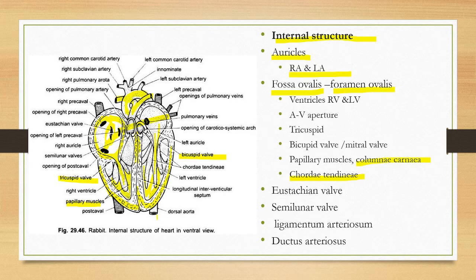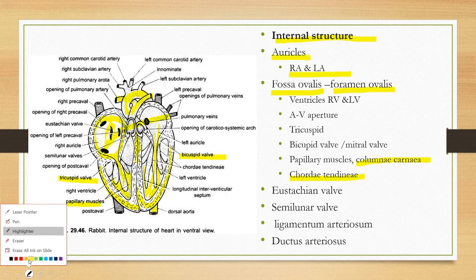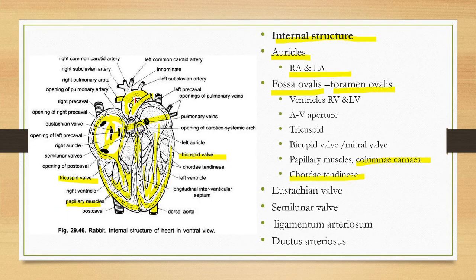The carotico-systemic aorta from the left ventricle continues as the dorsal aorta. In the embryonic period, at this position, there is a connecting structure called the ductus arteriosus.